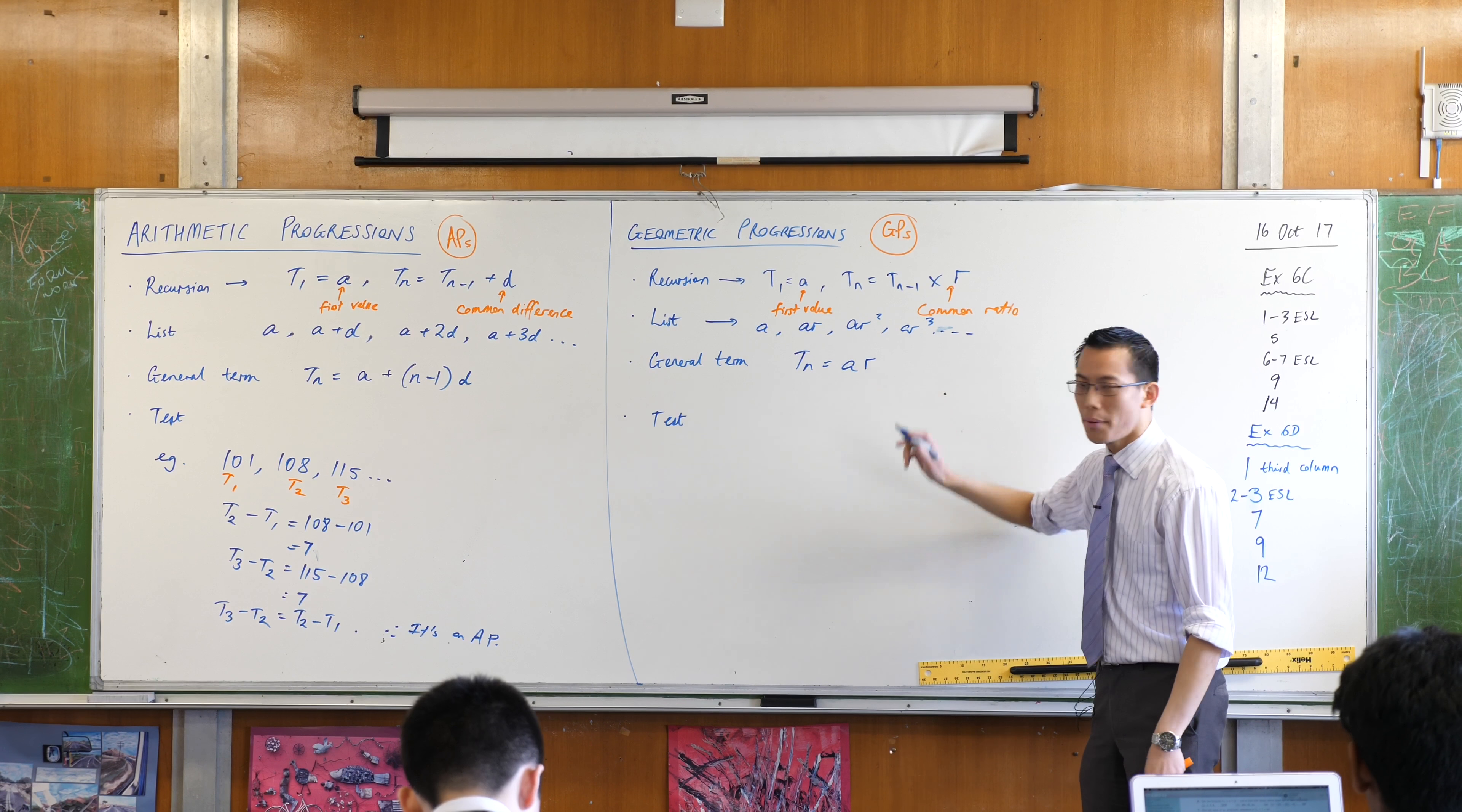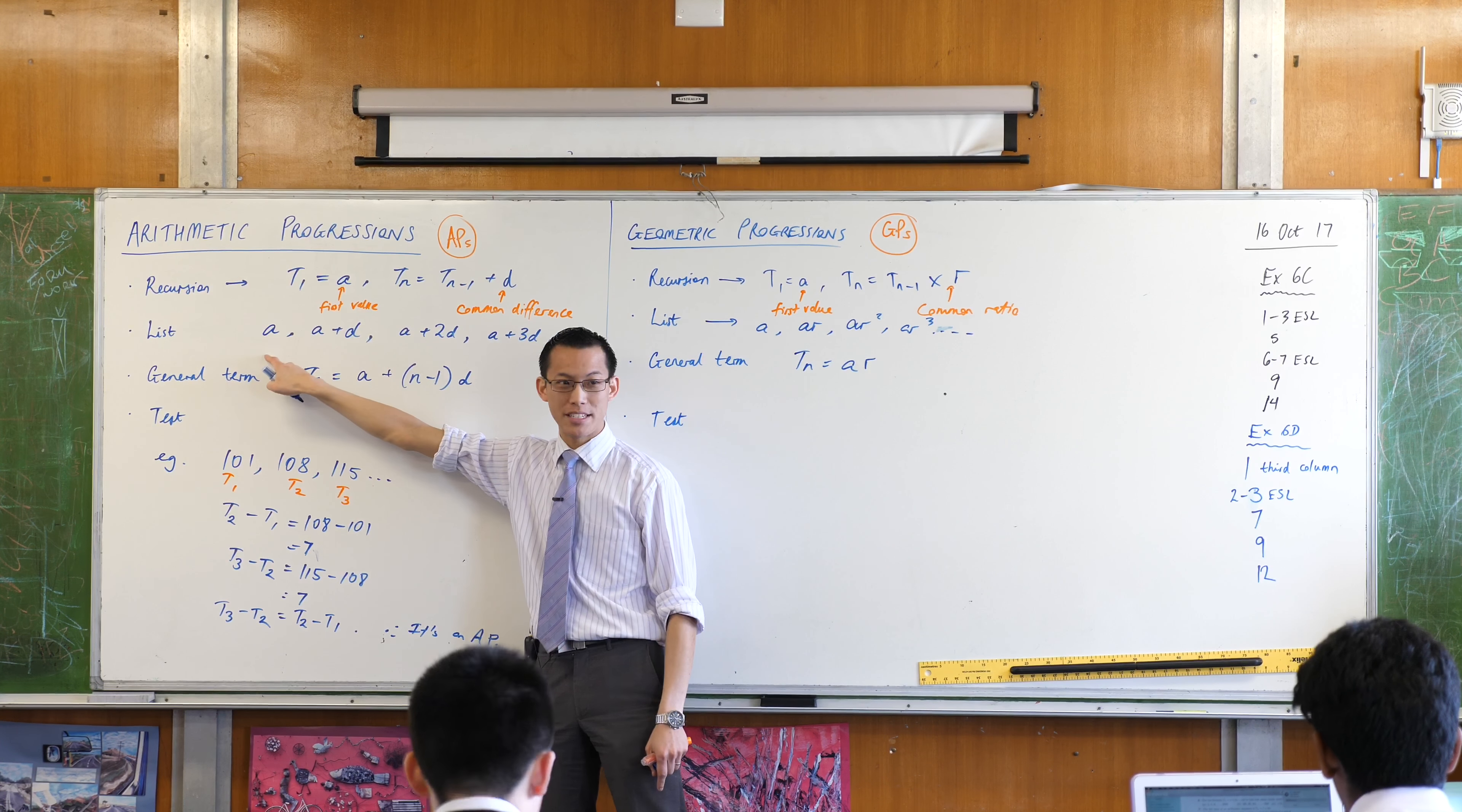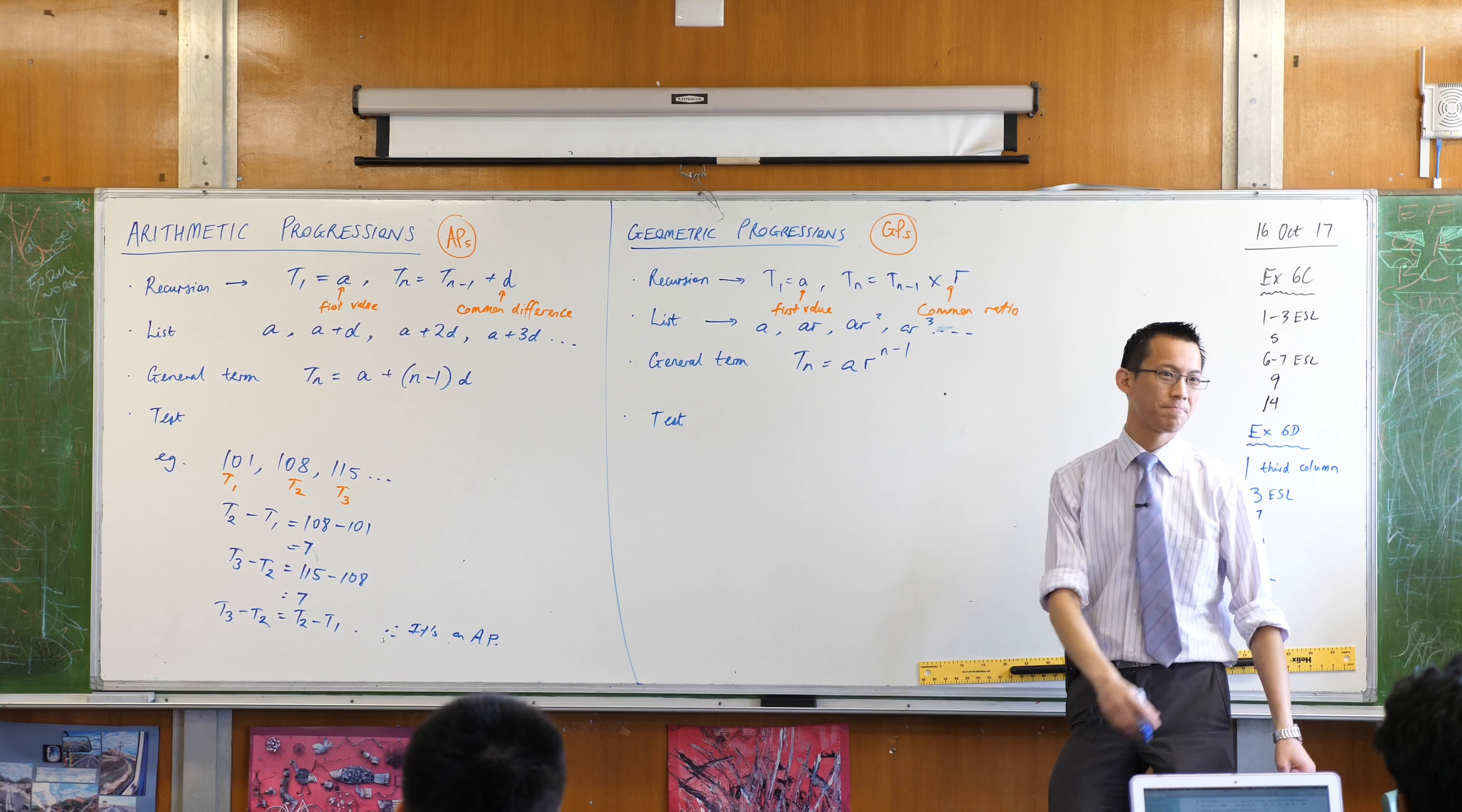I have some number of the common ratio being multiplied. How many? See how there are no common differences and then one and then two and then three? There's no common ratio and then one and then two and then three. Just like before, it's always lagging behind by one. So it'll be n minus one.